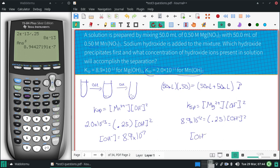In this case, the OH concentration is, let's see, 8.9 times 10 to the negative 12th divided by 0.25.